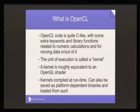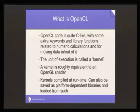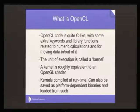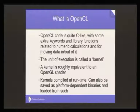OpenCL, as a programming language, looks quite much like C. It has a few extra keywords and types, and some library functions used for typical numerical calculations, for manipulating data types, and for moving data in and out of or between the host program and the OpenCL program. The things that you actually run in OpenCL are called kernels, which are quite similar to the concept of a shader in OpenGL — though the correct name is kernel.